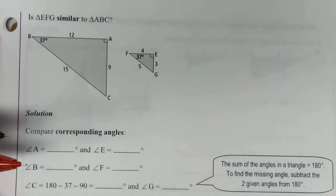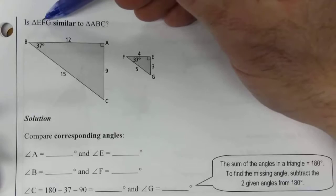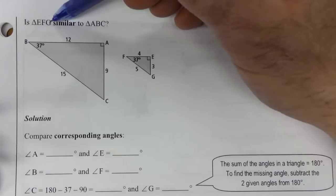So knowing those characteristics, we can analyze the situation to see if one triangle is similar to another. And here's our first example of that. We've got triangle EFG, and this is how we identify a triangle. We can draw a little triangle and then label its vertices. And we're wondering if it is similar to triangle ABC.